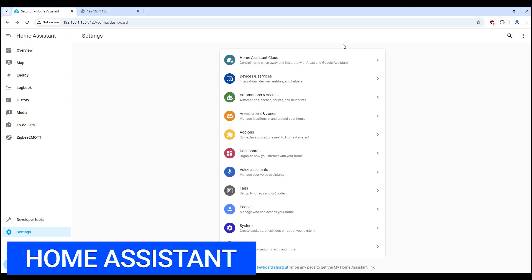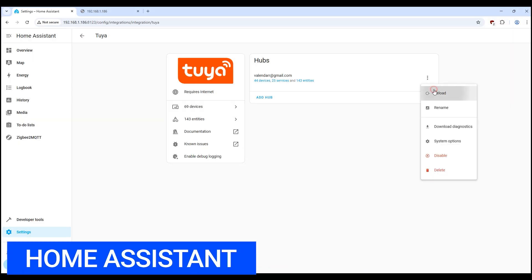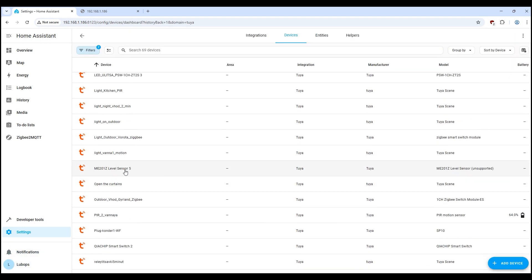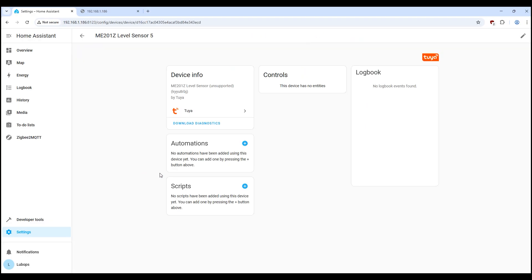First, let's check the integration via the Tuya cloud server. Restart the integration, go inside and find our device. Mi201z level sensor. Go inside the device plugin. And what do we see? It's not supported. Mi201z level sensor unsupported. It's a pity. Maybe it's just a new product.